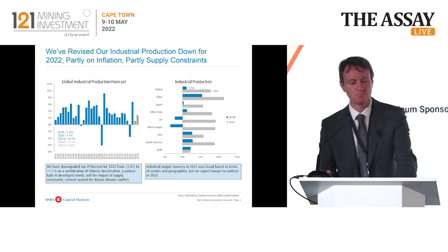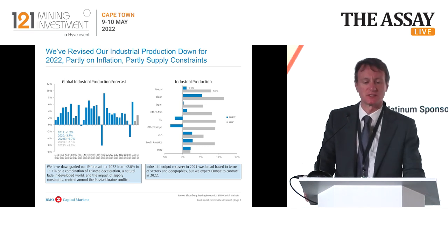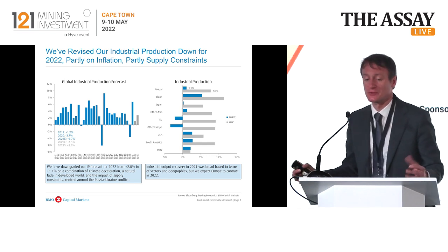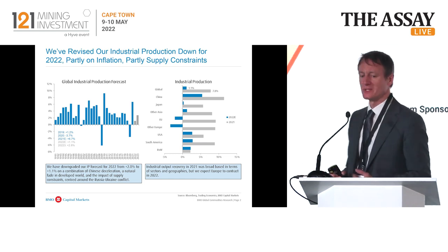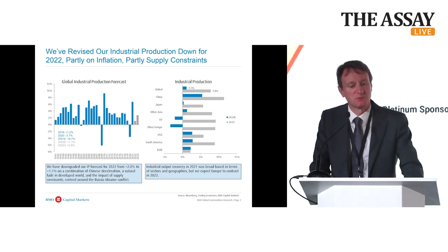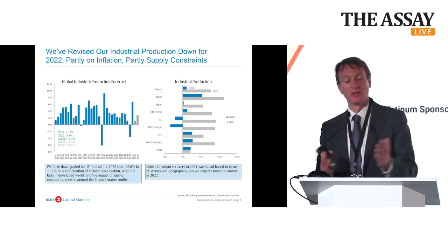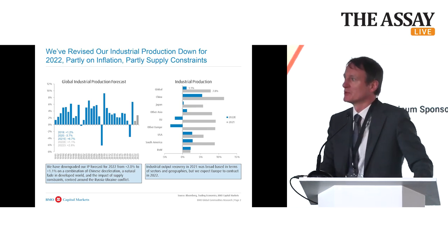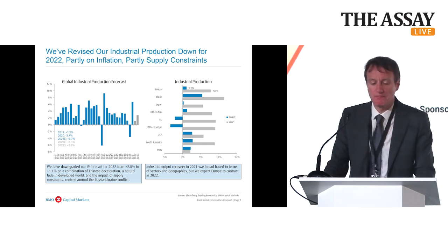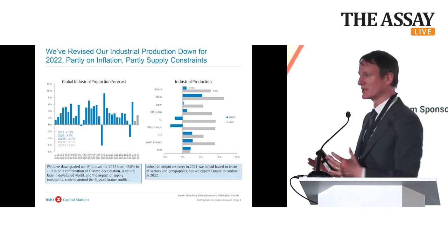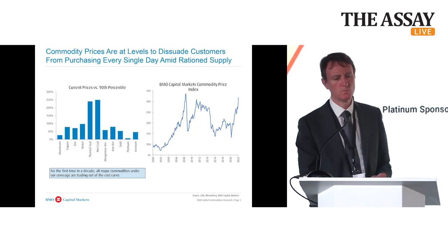The problem with a supply-constrained world is that you hurt demand. We are taking down industrial production across many regions. We had really strong industrial production growth last year — 7.8% globally. That's coming down pretty hard this year. Slower China, and Europe has to go negative unfortunately, with the power constraints there. I think you'll see industrial load shedding in Europe into the middle of the year. We're lowering demand forecasts because we have to ration demand to the supply that is available.